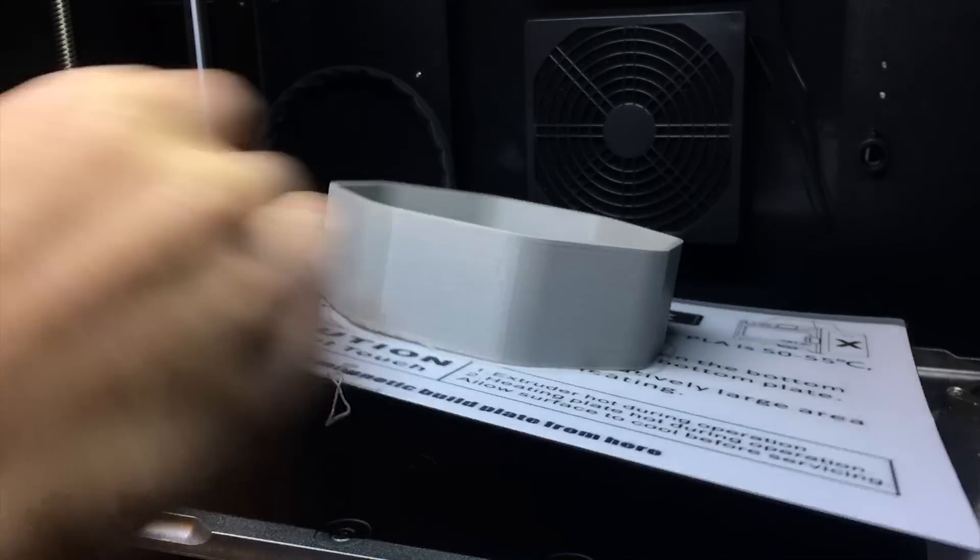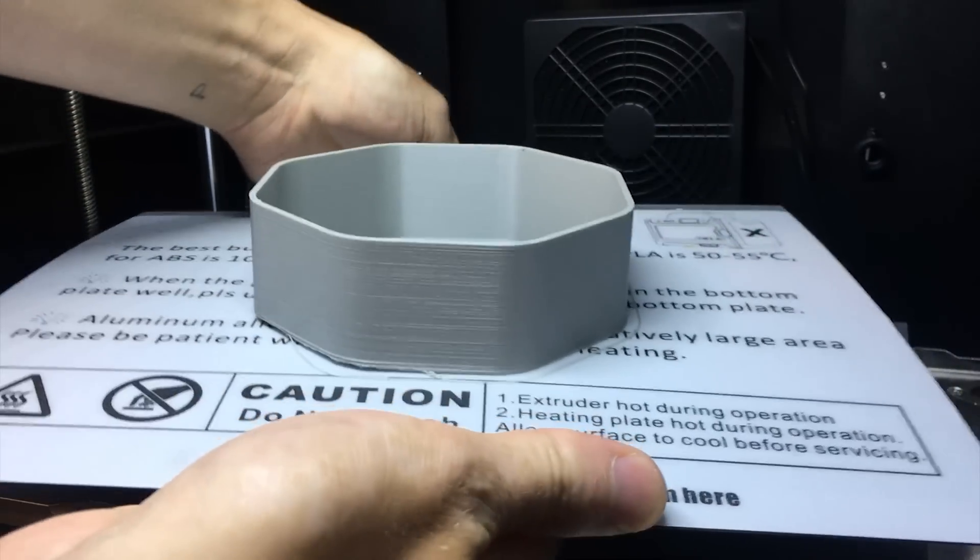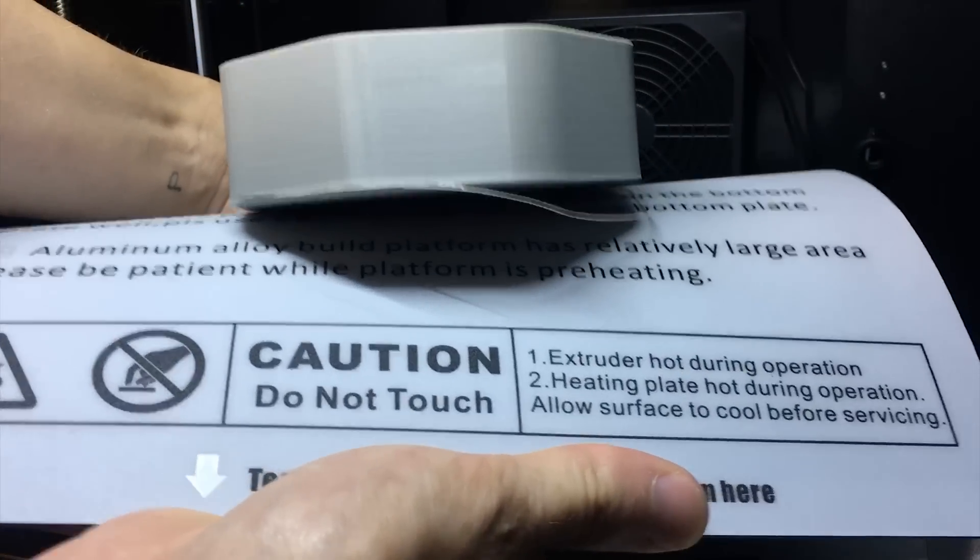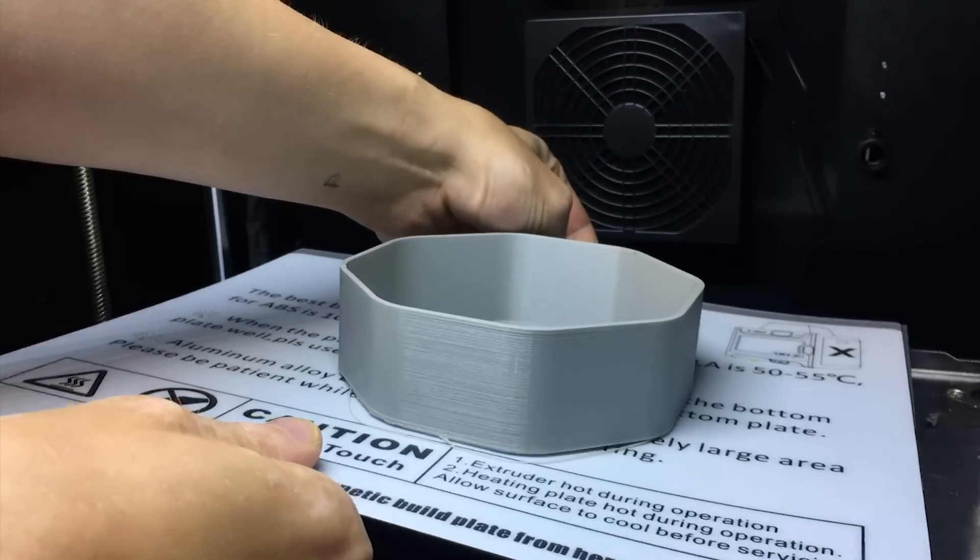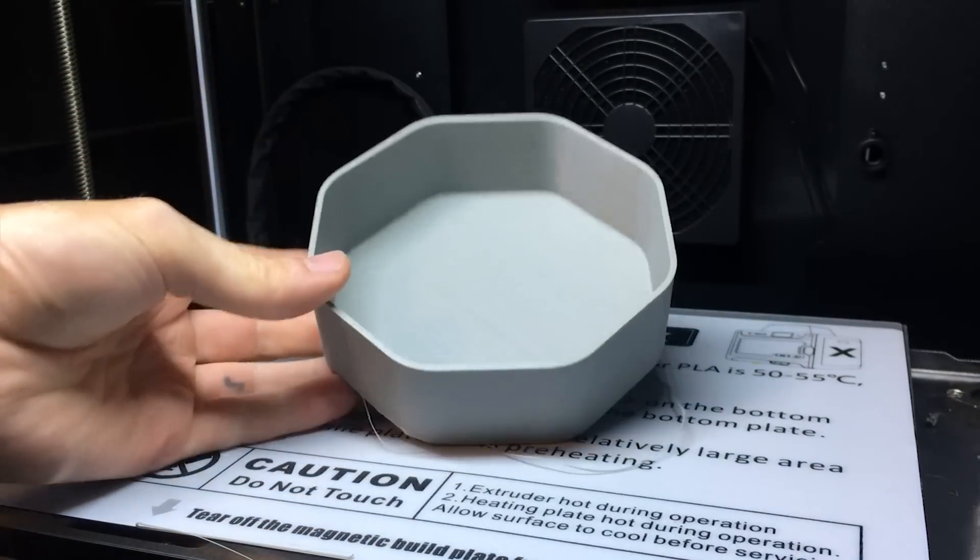The removable build plate has a nice rough texture that I found even ABS stuck to very well and released prints without any issues, although I had a few instances where it stuck a little too well due to an incorrect first layer height set in my slicer.